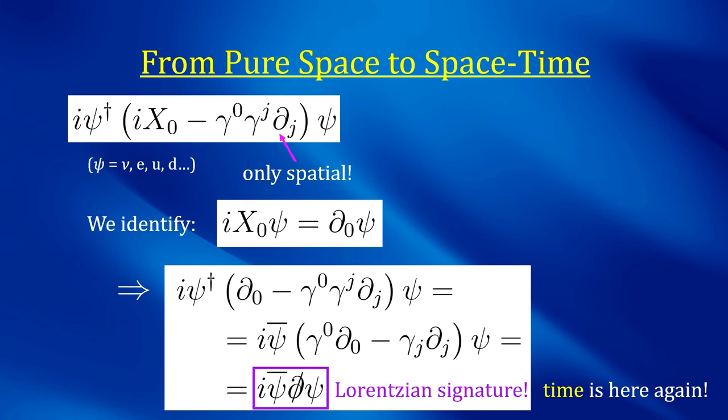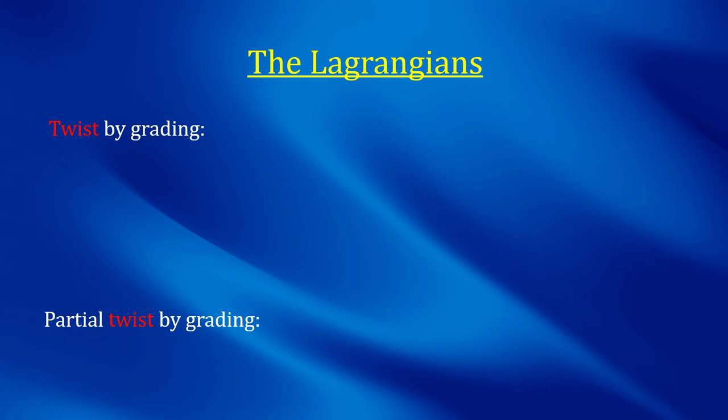In other words, the new axial vector field x mu somehow mediates the transition from Euclidean to Lorentzian signature, at least for the fermionic action. Moreover, it does not appear anywhere else in the fermionic action at all, so this identification doesn't clash with other Lagrangian parts.